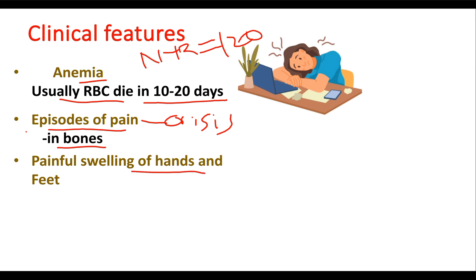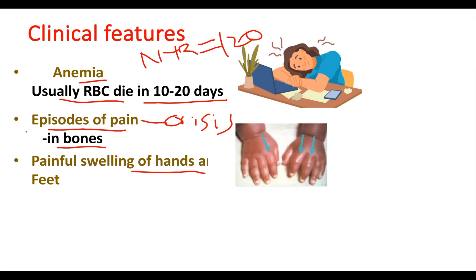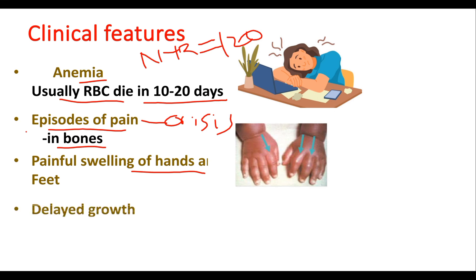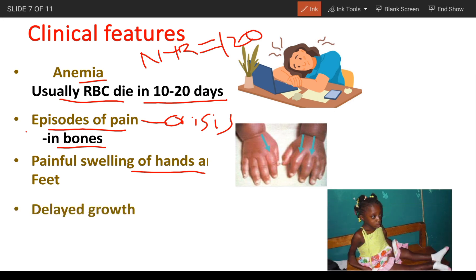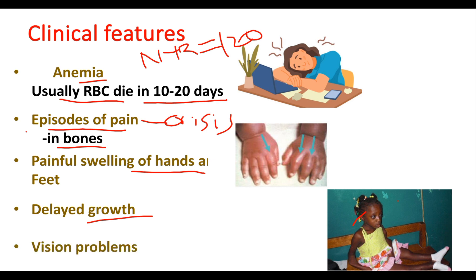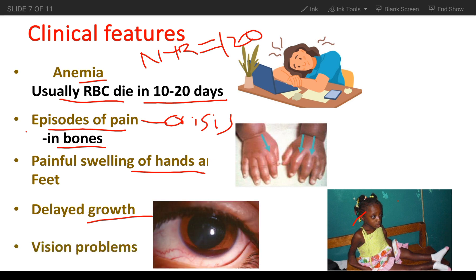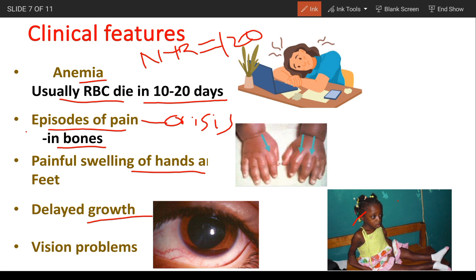Fourth, delayed growth — a shortage of healthy RBCs can slow down growth in infants and children and delay puberty in teenagers. Last, vision problems — tiny blood vessels that supply your eyes may become plugged with sickle cells, and this can damage the retina.